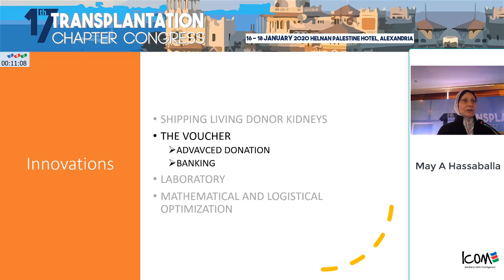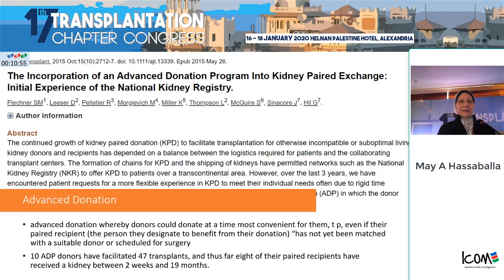Another very important innovation is the voucher, which resolves the problem when the donor and recipient are incompatible by time. In what we call advanced donation, the donor — due to time constraints — can only donate at the present time, even if their paired recipient has not yet found a suitable matched donor and is not scheduled for surgery. A study by Fleckner and colleagues showed that 10 such donors facilitated 47 transplants, and by the time of publication in 2015, 8 of their paired recipients had received a kidney within 2 weeks to 19 months.